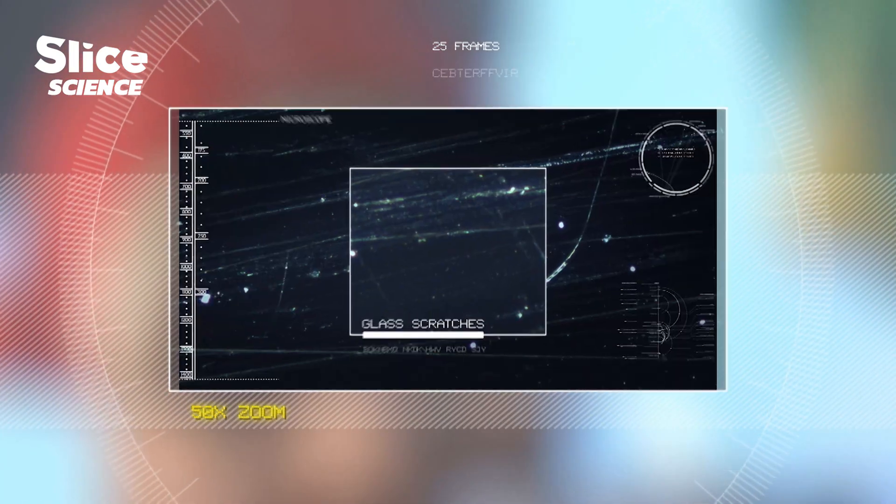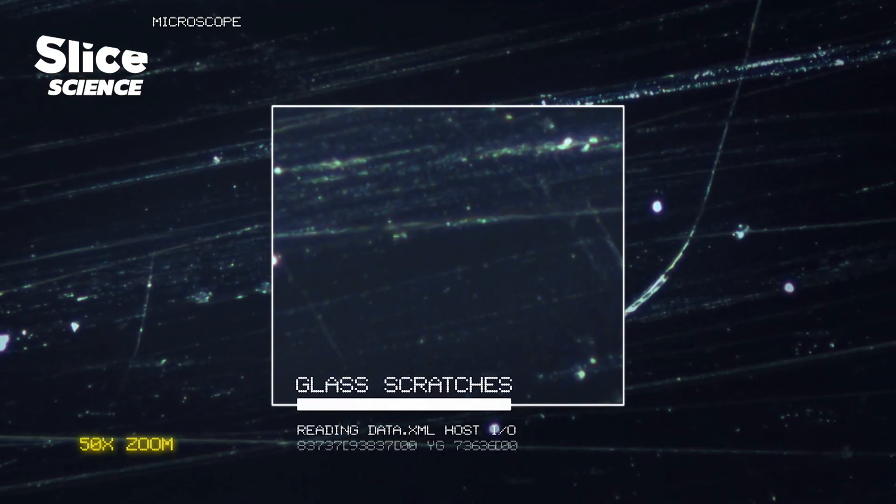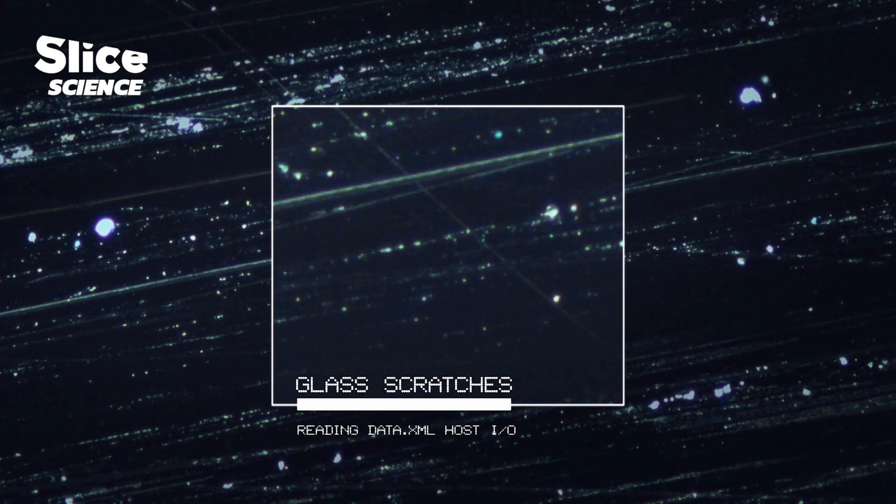The scouring pad leaves behind ugly scratches. They're not easily seen with the naked eye, but when magnified fifty times, they look like a miniature Milky Way.